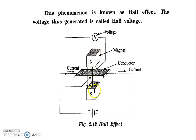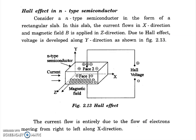We apply the magnetic field along this direction, from north to south, perpendicular to both current and magnetic field. This is an n-type semiconductor slab. The direction of current is along the plus x direction, and the magnetic field is applied along that direction.